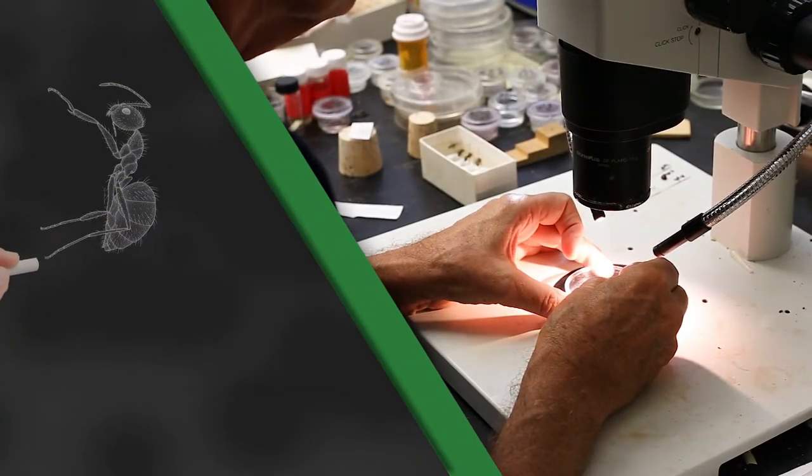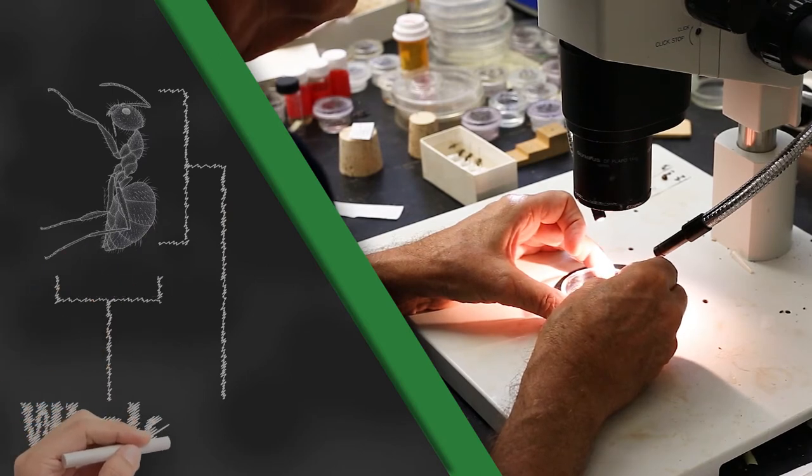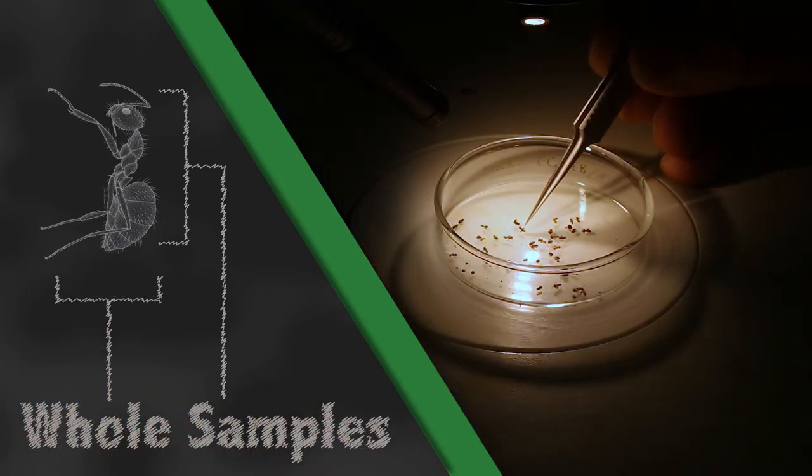We want whole, fresh samples. We need to be able to look at the antenna and count how many segments are on the antenna. We need to look at the arrangement of hairs, so we need a pretty specific sample.